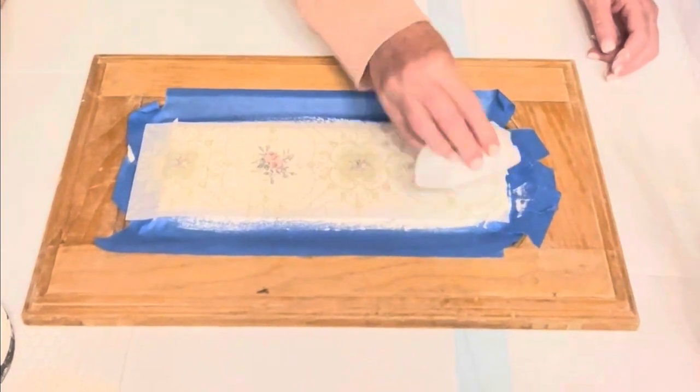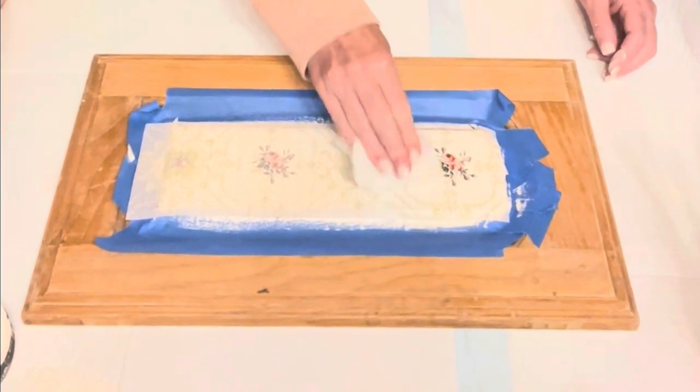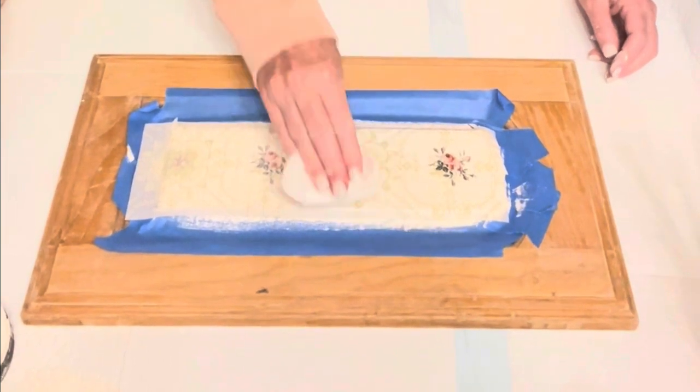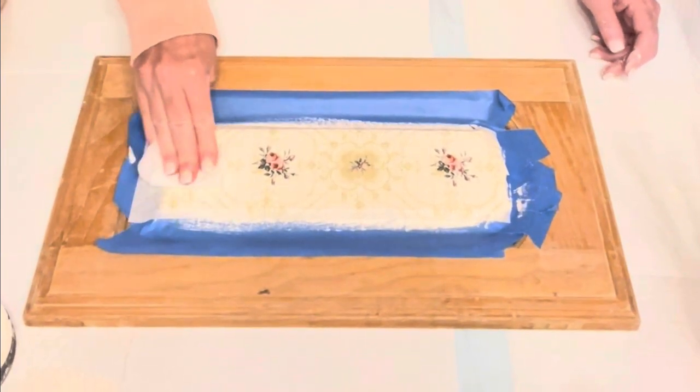Then I take a little baby wipe. You can use any type of a damp rag and press that down straight up and down. Once again, just pat it. You can see that it brightens up as that paper gets damp. This step is very important.